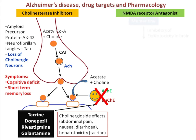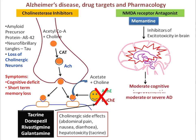Memantine is the NMDA receptor antagonist drug, which inhibits excitotoxicity in the brain. This excitotoxicity is the major pathological villain in Alzheimer's disease, and it is inhibited by memantine. This drug produces moderate cognitive improvement and can improve moderate to severe Alzheimer's disease, thereby improving symptoms of cognitive deficit and short-term memory loss.